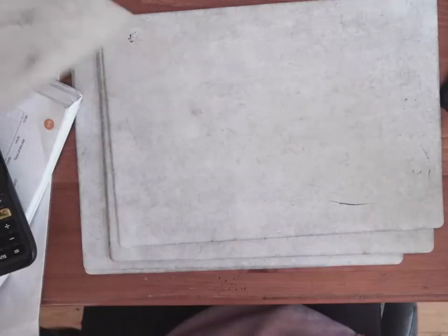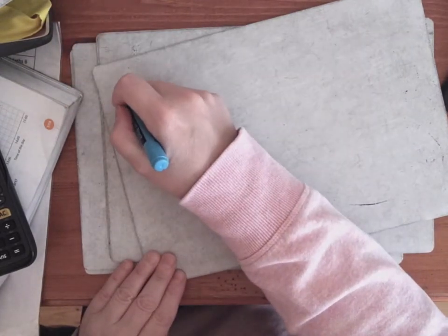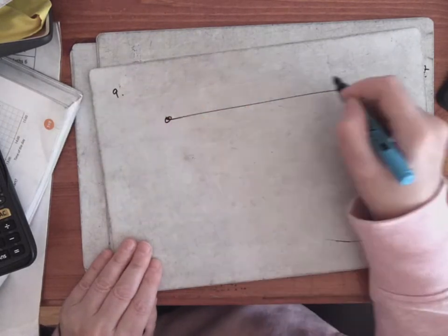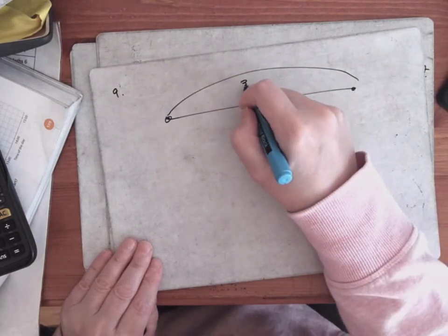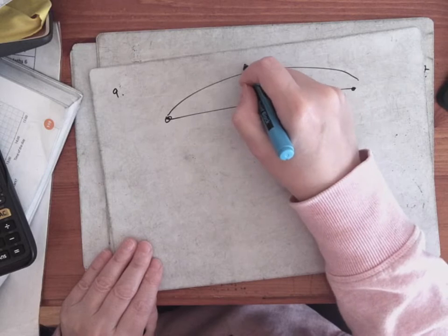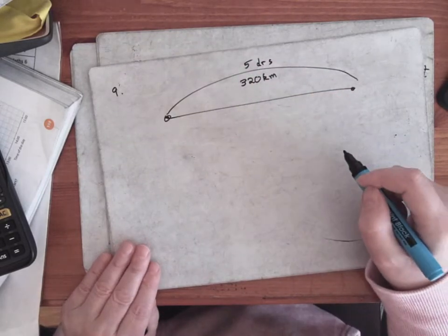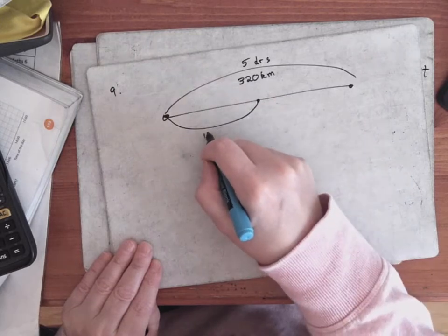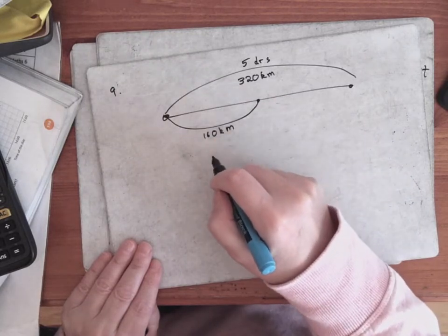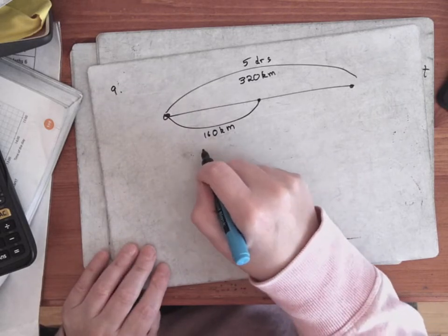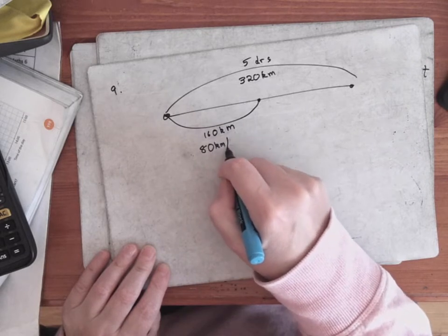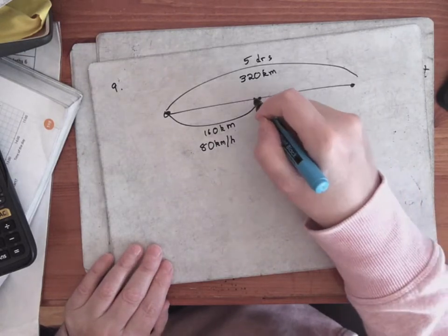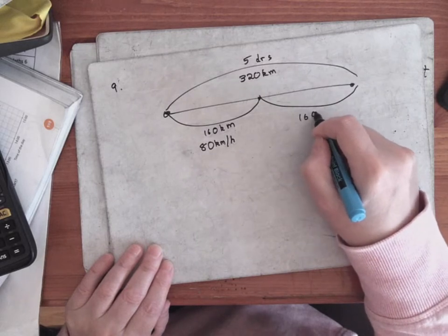Number nine: a motorist traveled 320 kilometers — so the whole journey was 320 kilometers — and it took five hours in total. The average speed for the first 160 kilometers was 80 kilometers per hour. We need to find the average speed for the second 160 kilometers.